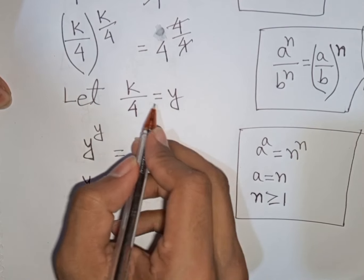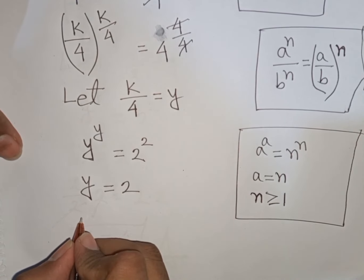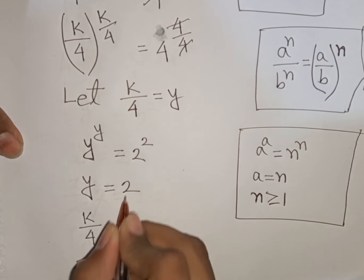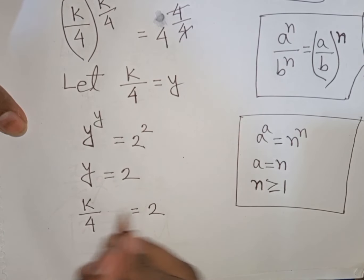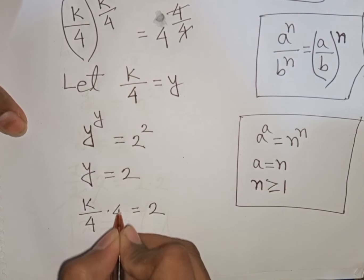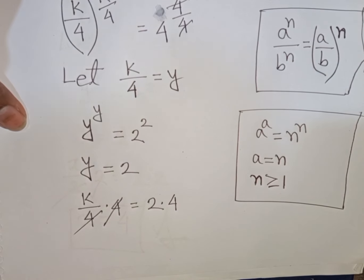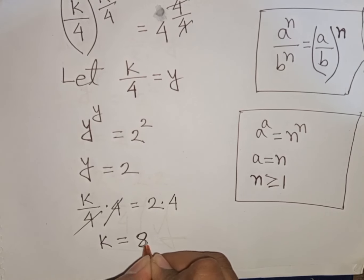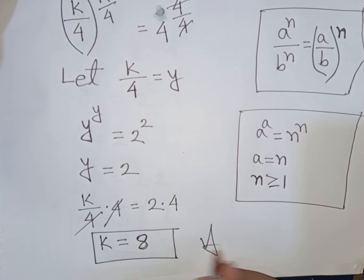Remember that y means k divided by 4. So k/4 = 2. We need the value of k, so multiply both sides by 4. This gives k = 2 × 4 = 8. So k = 8 is the final answer.